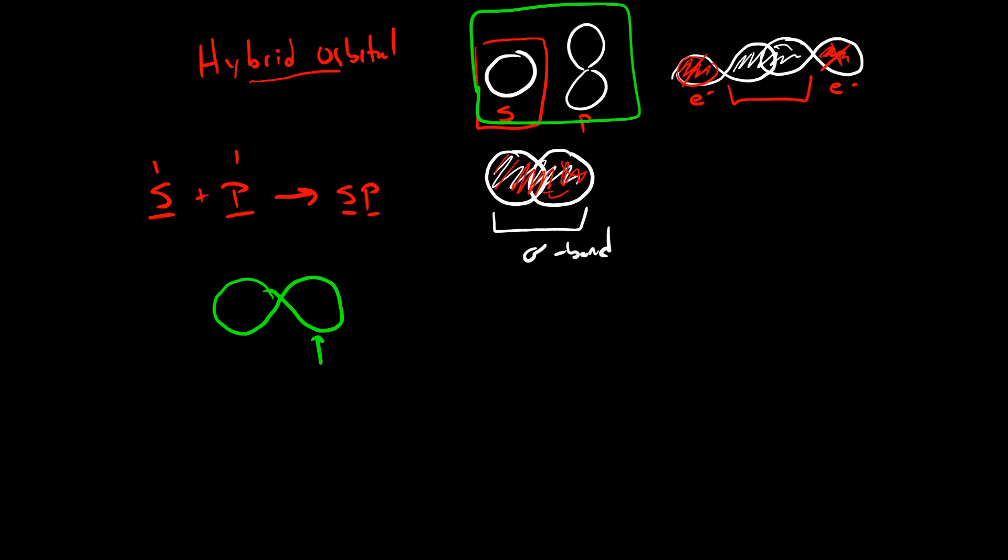This lobe of the sp has the ability to hold two electrons, so we can put two electrons here, and this lobe also has the ability to hold two electrons. We started with the ability to hold four electrons, we end with the ability to hold four electrons. We start with two orbitals, we end with two lobes. So that's the idea of a hybrid orbital.